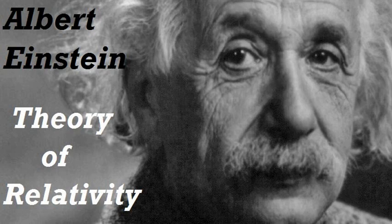The reader may think that such a description of the world would be quite inadequate. What does it mean to assign to an event the particular coordinates x sub-1, x sub-2, x sub-3 and x sub-4 if in themselves these coordinates have no significance? More careful consideration shows, however, that this anxiety is unfounded. Let us consider a material point with any kind of motion. If this point had only a momentary existence without duration, then it would be described in space-time by a single system of values x sub-1, x sub-2, x sub-3 and x sub-4. Thus its permanent existence must be characterized by an infinitely large number of such systems of values, the coordinate values of which are so close together as to give continuity, corresponding to the material point. We thus have a unidimensional line in the four-dimensional continuum.